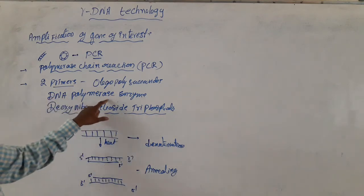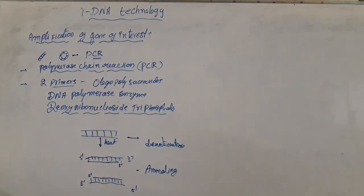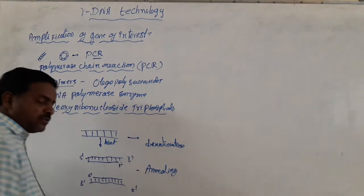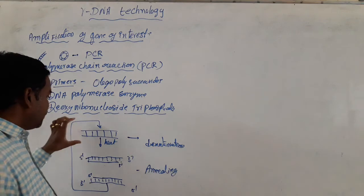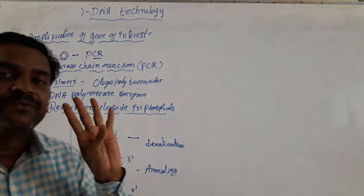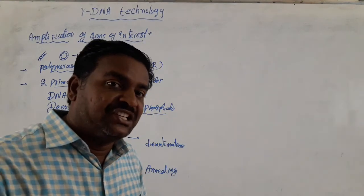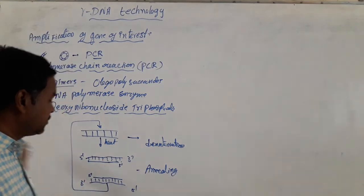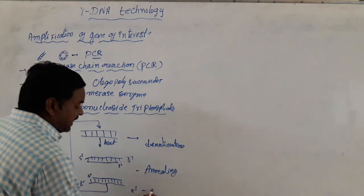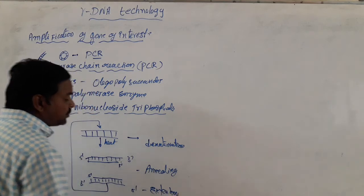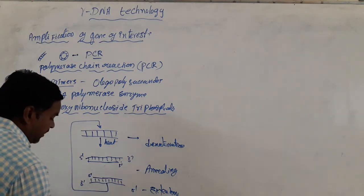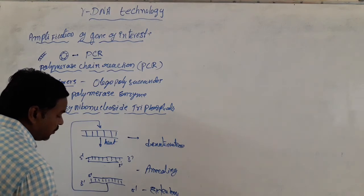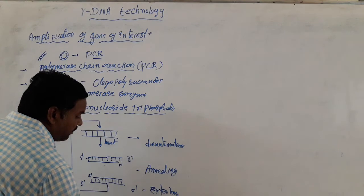These primers extend the strands in a 5-prime to 3-prime direction, by using deoxyribonucleoside triphosphates and in the presence of DNA polymerase enzyme, leading to the formation of two DNA molecules. These two desired DNAs are also heated again — it is a chain reaction. These two DNA molecules separate into four strands, which are also extended, resulting in the formation of a total of eight DNA molecules. This sequence of events — denaturation, annealing, and extension — is called extension.